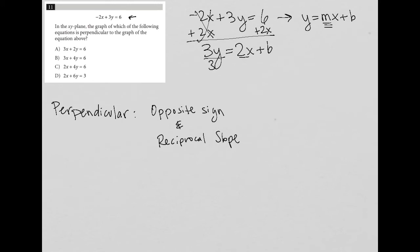And then I can divide each thing here by 3, leaving me with y equals 2 thirds x plus 2, right? Because 6 divided by 3 is equal to 2. So now here's my slope.